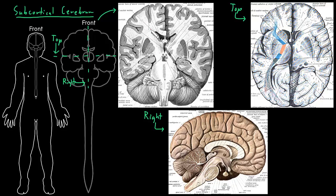One important subcortical white matter structure deep in the cerebrum is this band of white matter going deep in the cerebrum between some of these gray matter nuclei. The name of this subcortical band of white matter is called the internal capsule.